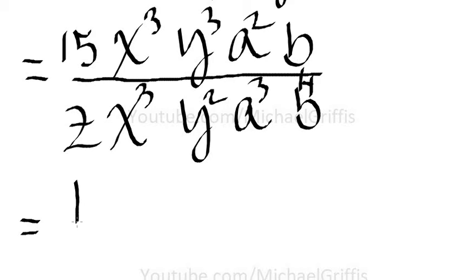Rewrite the 15. We have x cubed over x cubed, so those cancel out. We have y cubed in the numerator and y squared in the denominator, so that reduces down to just y. We have a squared over a cubed and b over b to the fourth.